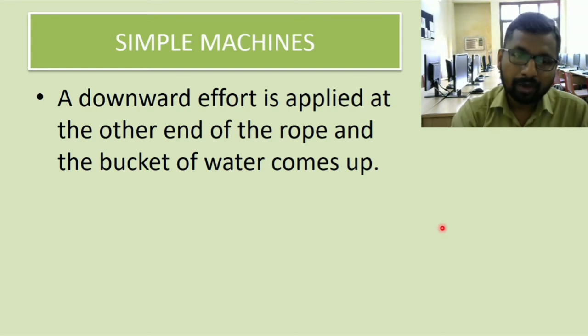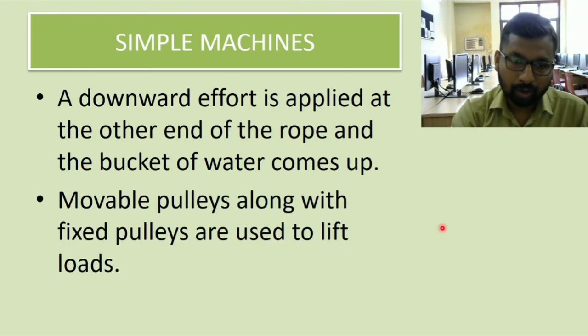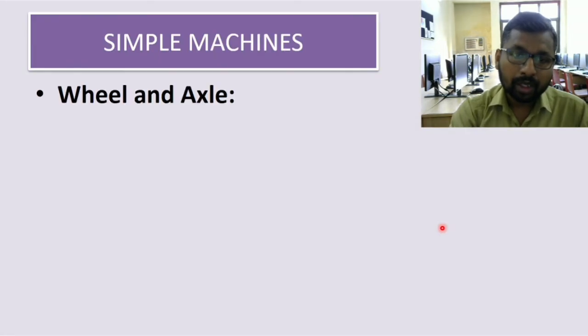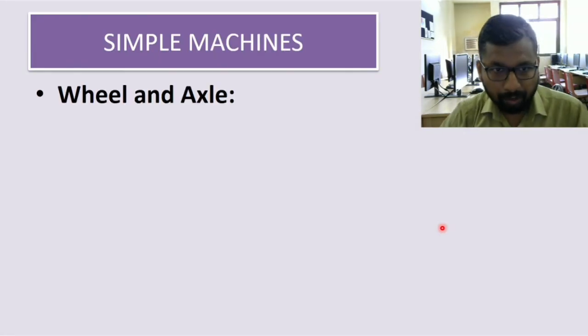In this way we make use of such kind of pulleys. Then there is a movable pulley along with a fixed pulley that are used to lift loads. Then comes the next type of machine, which is wheel and axle.